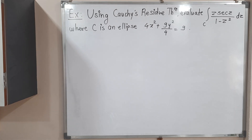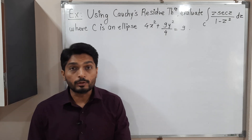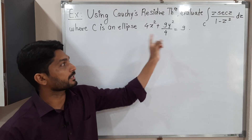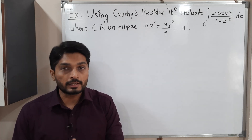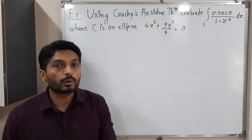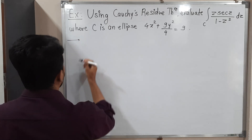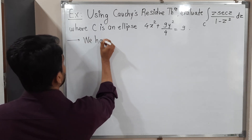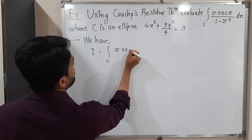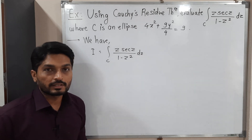In this video we are going to discuss this example. This is a complex integral; we have to find its value where c is an ellipse. The equation is given and we have to find the value of this integration with the help of Cauchy's residue theorem. So let us write the given integral first, we will call it as I. We have I equal to integration over c of z·sec(z) upon (1 minus z²) dz.